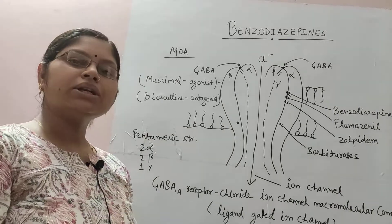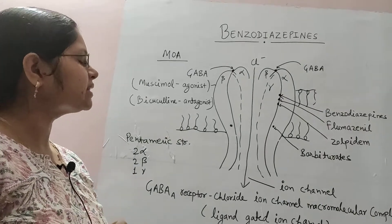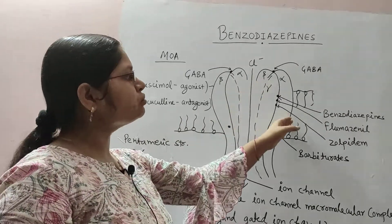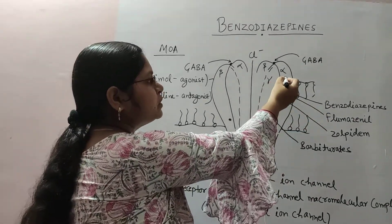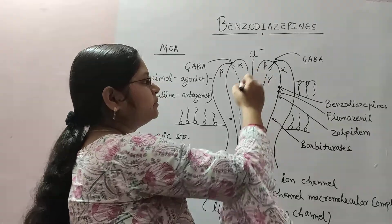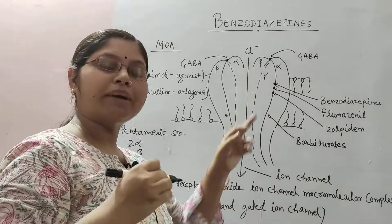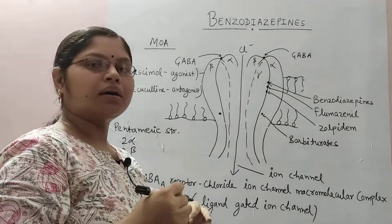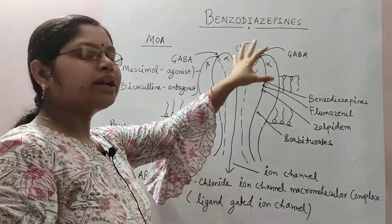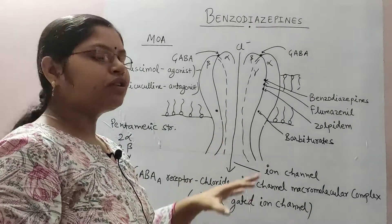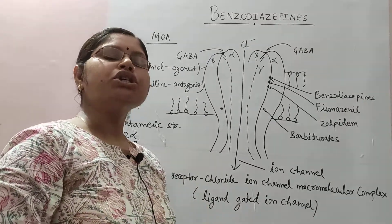The final action is the opening of chloride channels, which results in hyperpolarization. Coming to the benzodiazepine binding site: this binding site is present between the alpha and gamma subunits — this is an important point to note. When benzodiazepine drugs bind to this site, there is a conformational change in the receptor, and this conformational change results in modulation of GABA action.